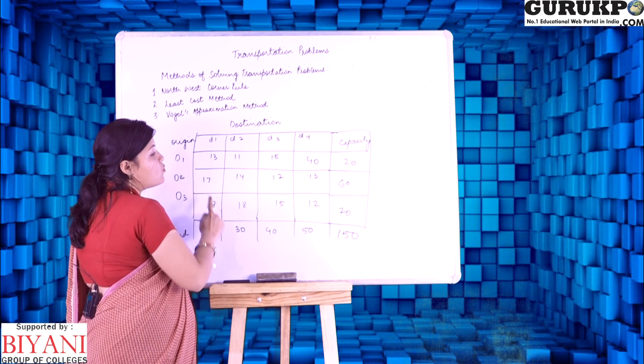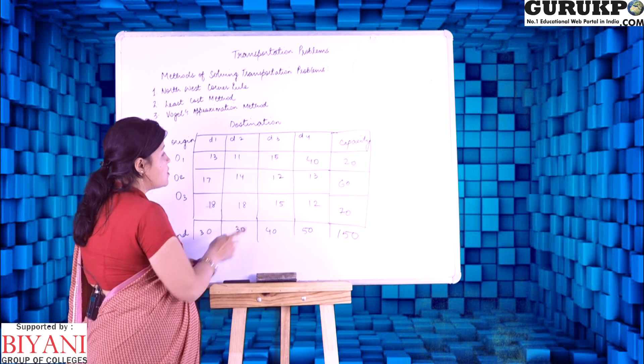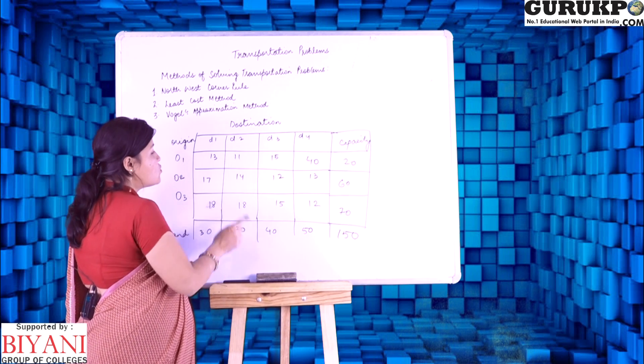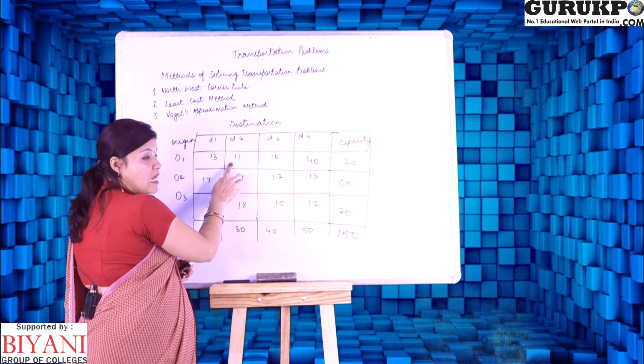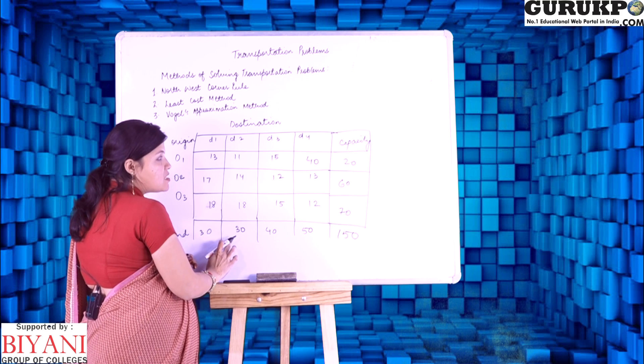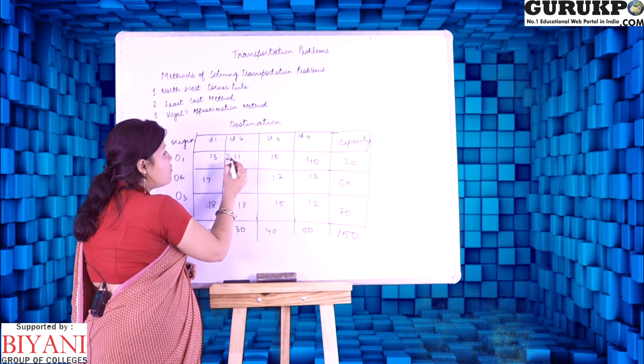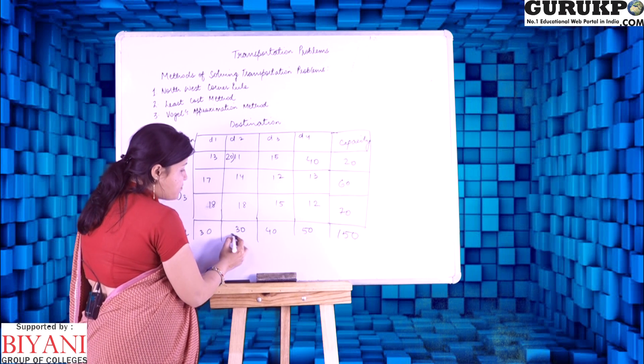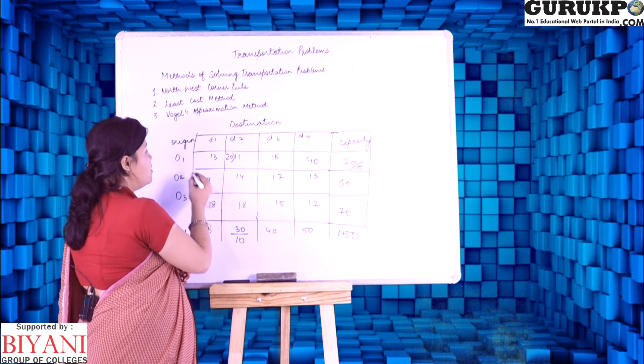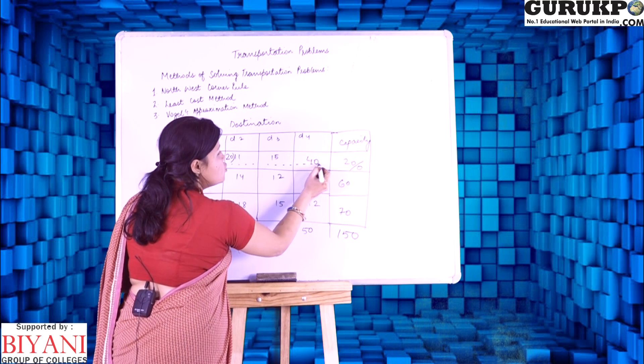First, we will have to check out the least cost where we have to allocate the units. Now, O1 origin can supply 20 units. So, the least cost here is 11 and the destination 2 requirement is 30 and origin 1 supply capacity is 20. So, we can give here 20 units. Here, remaining is 10 and here the demand is satisfied. So, we will cancel it by dotted lines.